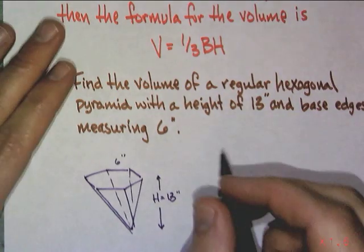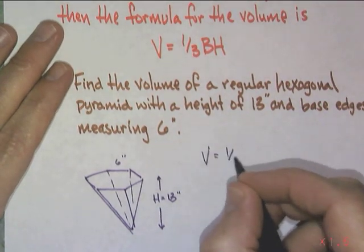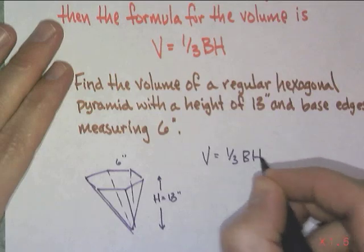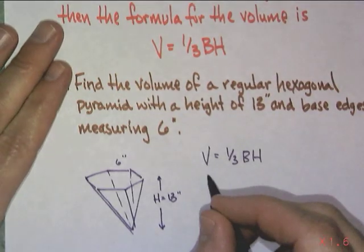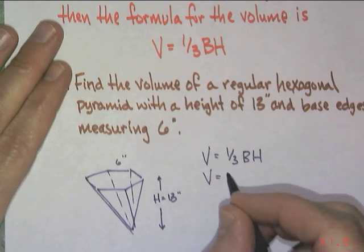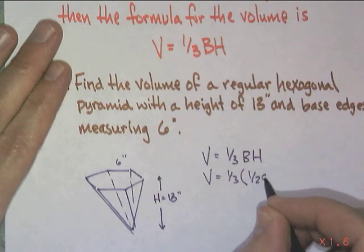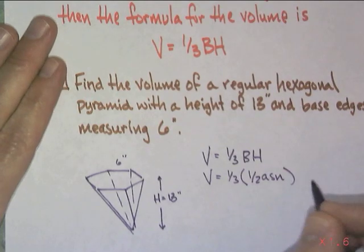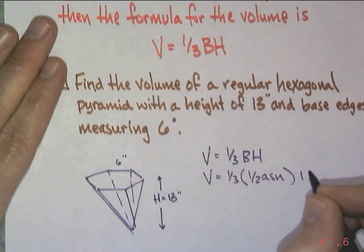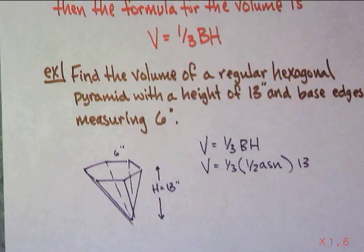A habit you should look into. Volume is equal to one-third base times height. In this case, there's a formula for the base. And the volume is going to be one-third, and this is going to be the one-half ASN times the height. And that one I know is going to be thirteen.